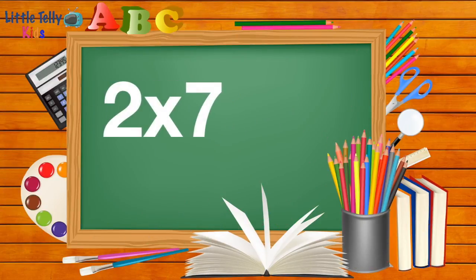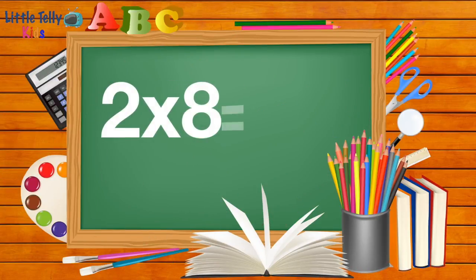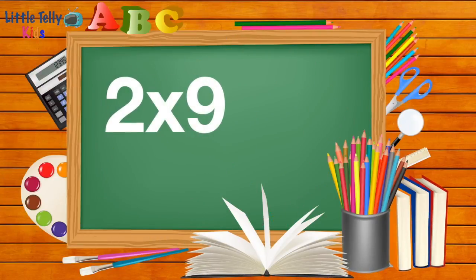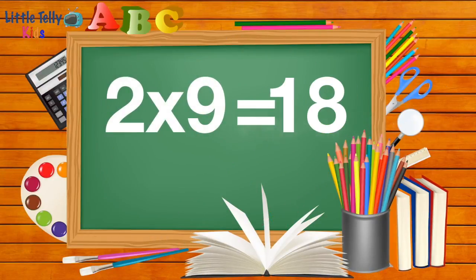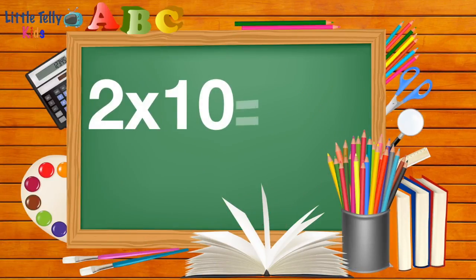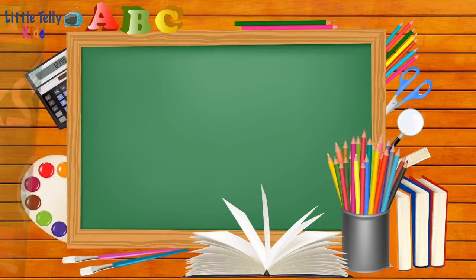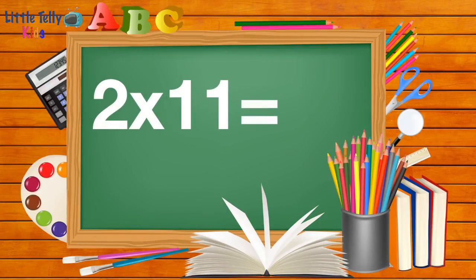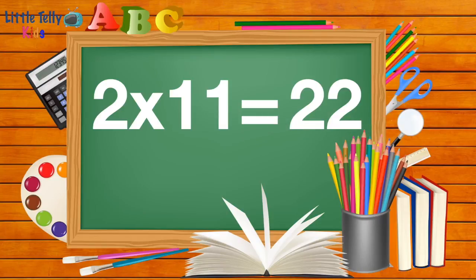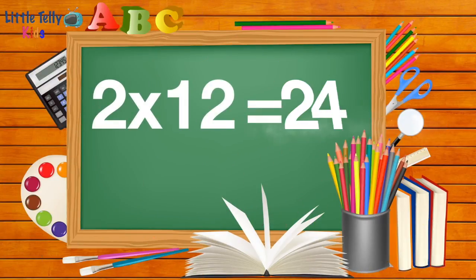2 7s are 14. 2 8s are 16. 2 9s are 18. 2 10s are 20. 2 11s are 22. 2 12s are 24.